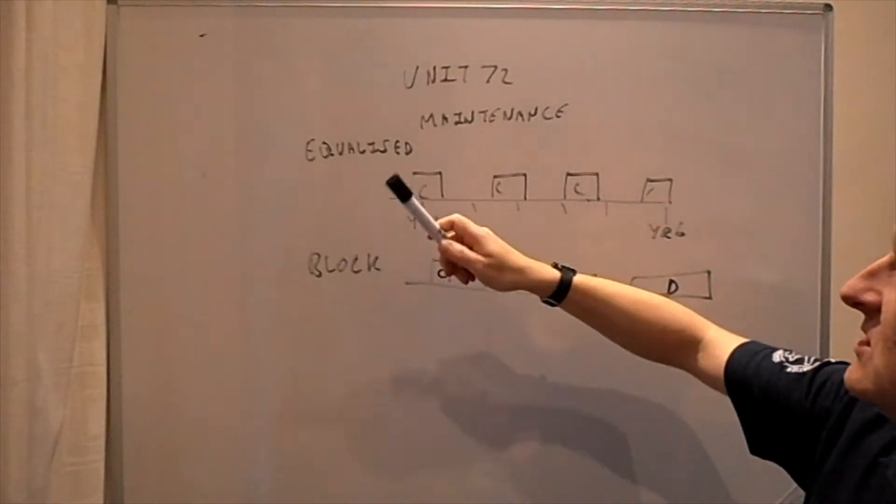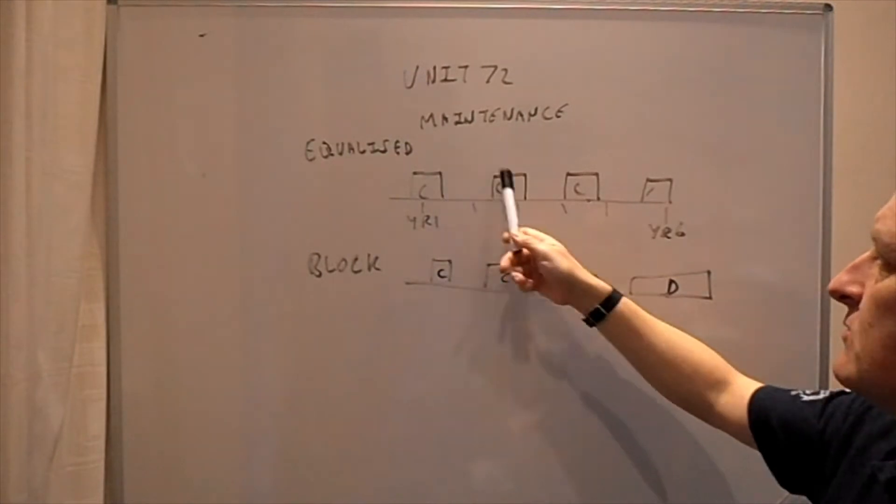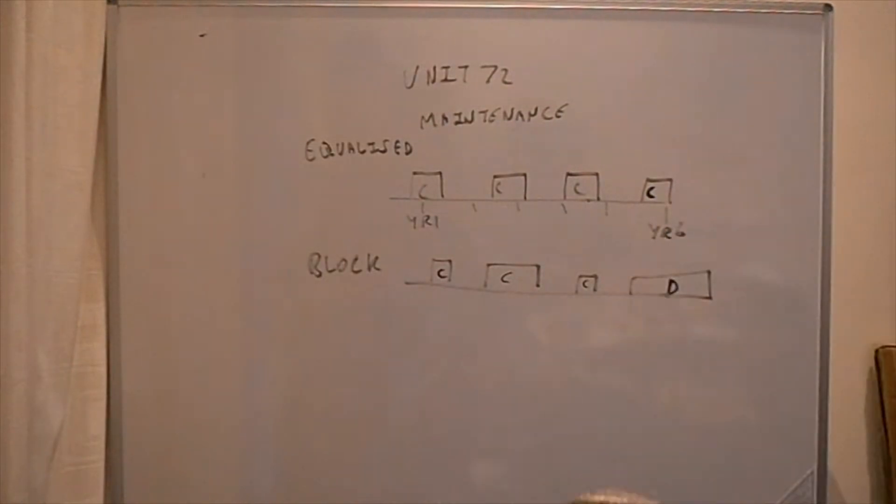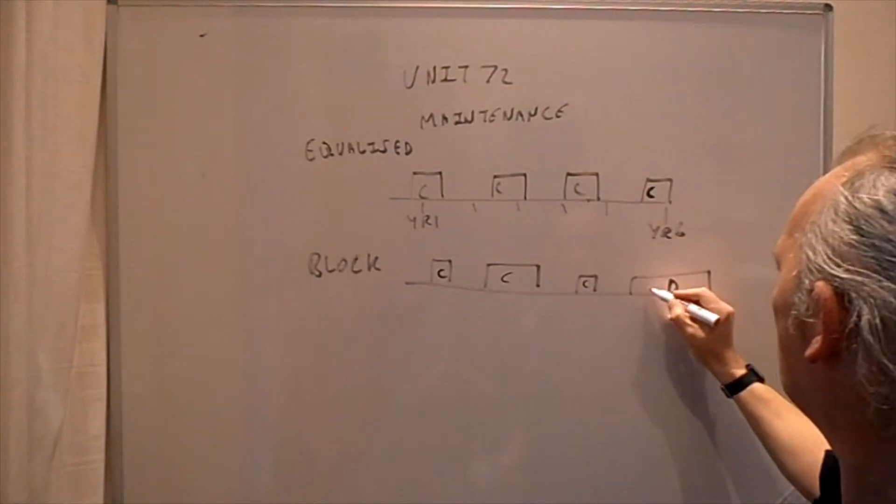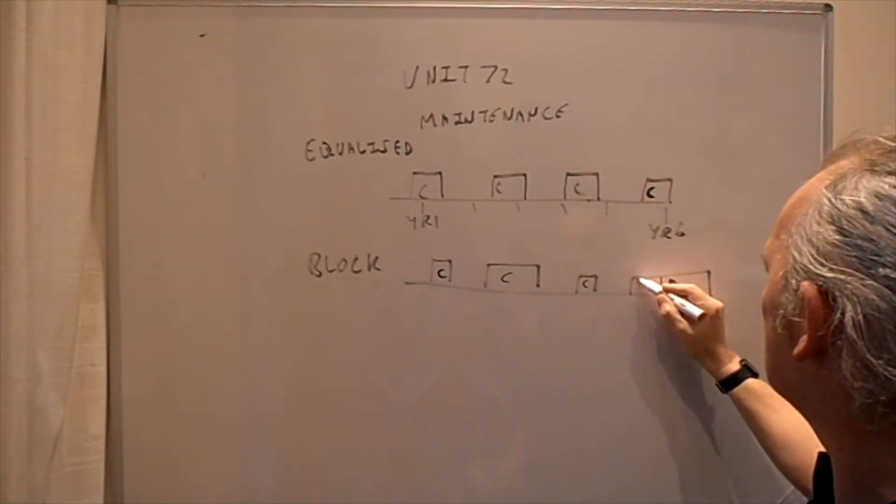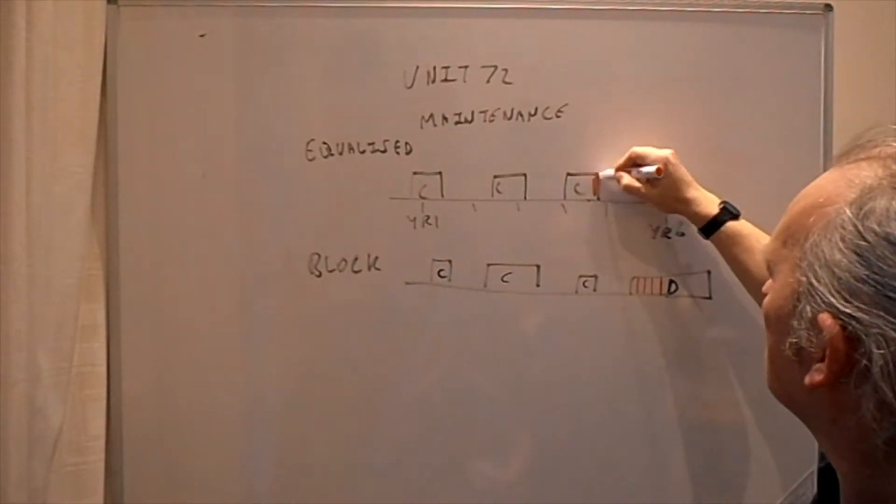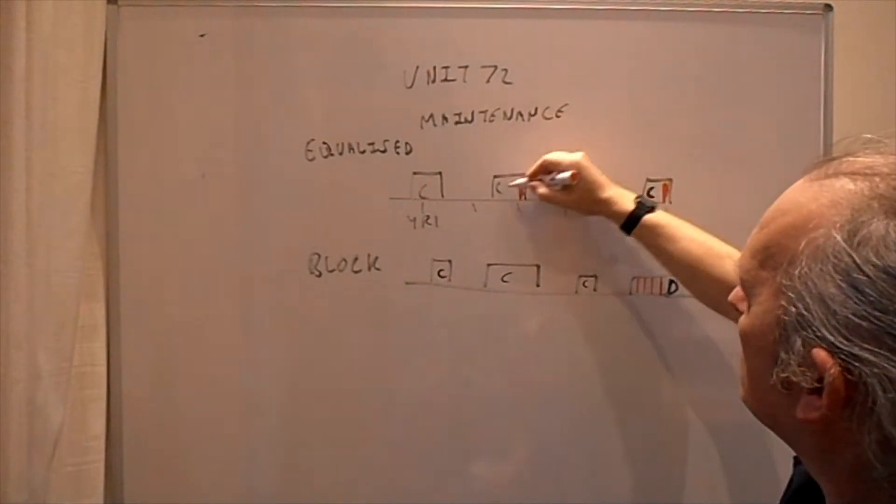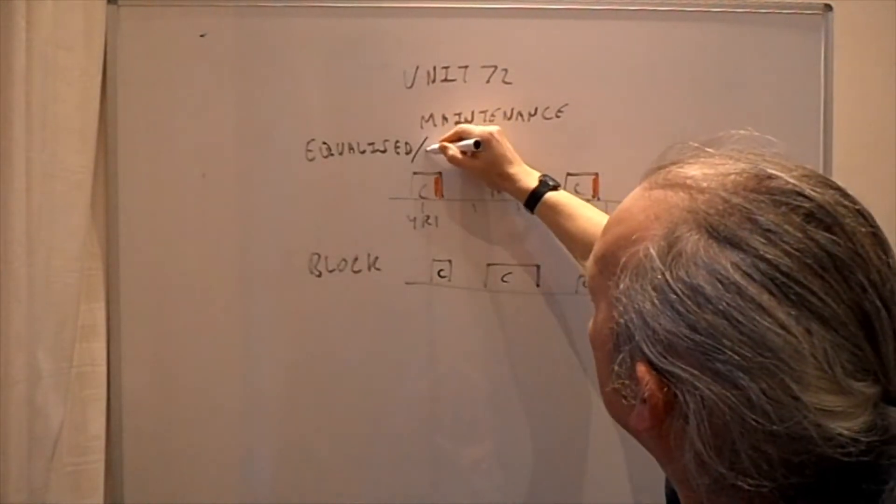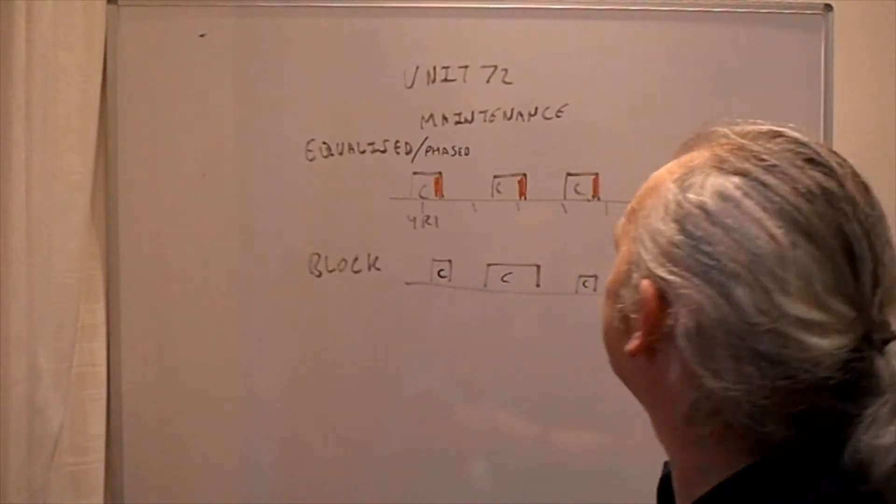You can see your equalized check. With equalized maintenance, you do a C-type check, and if you take all the C-checks in that six-year period and take about that much of a chunk out and divide that into about four bits, then add that on there. This is sometimes called phased as well, so this is equalized or phased.